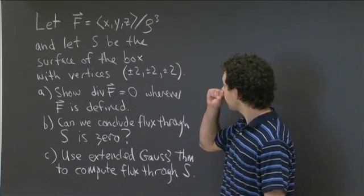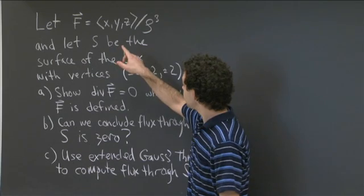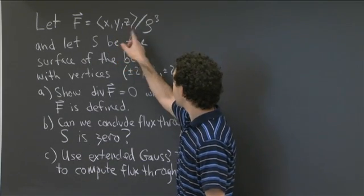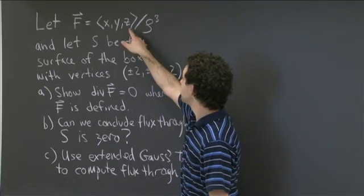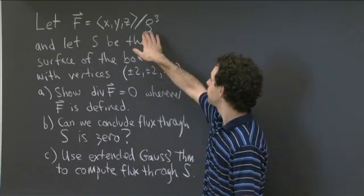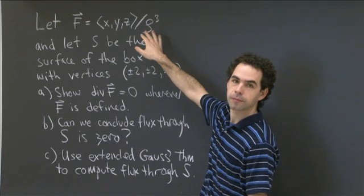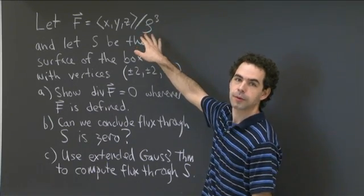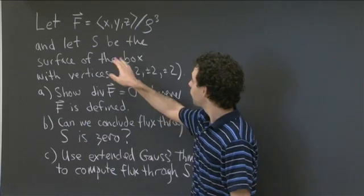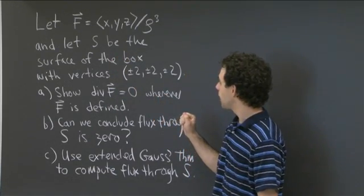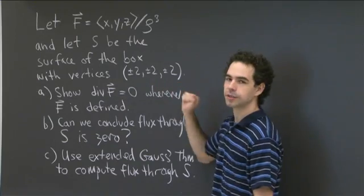So what I want you to take is F, the field whose components are x over rho cubed, y over rho cubed, and z over rho cubed. Here, rho is your usual rho from spherical coordinates — rho is equal to the square root of x squared plus y squared plus z squared. And I want S to be the surface of the box whose vertices are plus or minus 2, plus or minus 2, plus or minus 2.